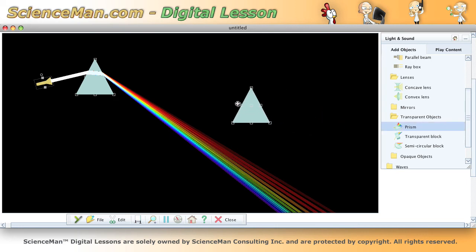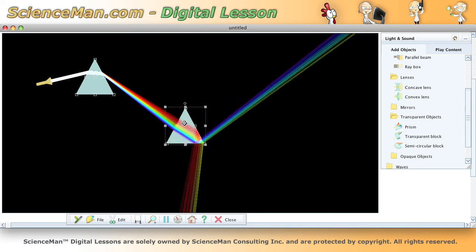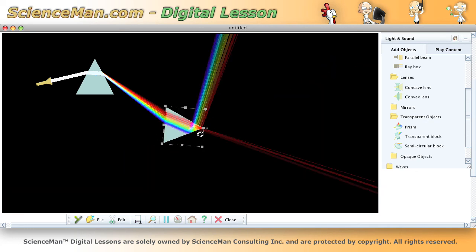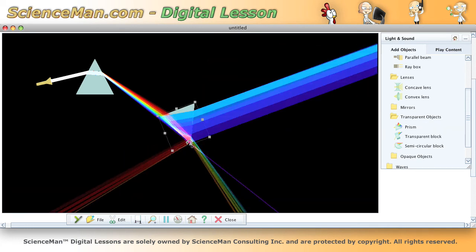Using another prism to recombine the spectrum into white light, and often you'll see this done with the two prisms separated by a distance, with one prism upside down and the other one right side up, something like this.